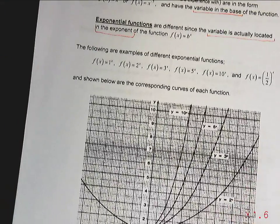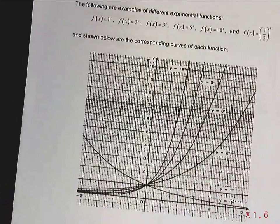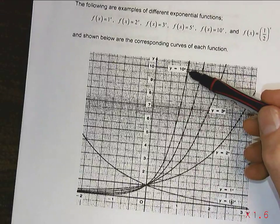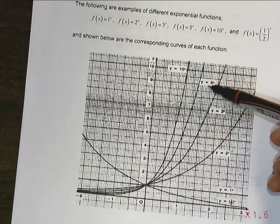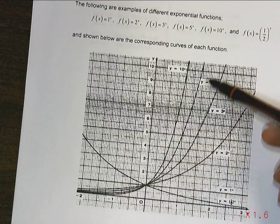Shown below are some curves of exponential functions. I'm just going to bring this up so you can see it a little bit better. And you'll notice that 10 to the x, the base is larger, so it rises faster than 5 to the x or 3 to the x and 2 to the x. All of these are increasing functions.